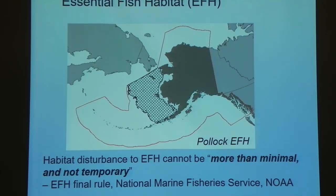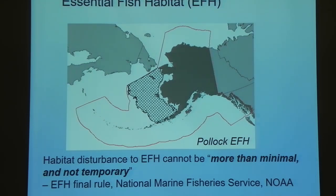At the federal marine level, as far as management goes, there is a framework for considering habitat called essential fish habitat, or EFH. Every managed stock at the federal level has a designated EFH. For example, Alaska pollock — this thatched area on the map is the EFH for pollock. What comes with that is a legal mandate that habitat disturbance to EFH cannot be more than minimal and not temporary. Yes, that is a double negative, and it's also a very vague mandate. I'll get back to how we can approach this vague language with a quantitative approach.